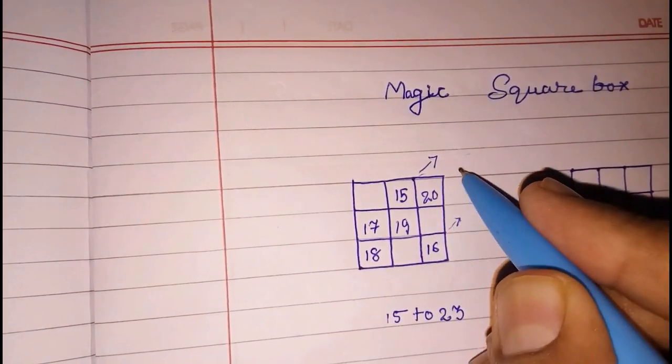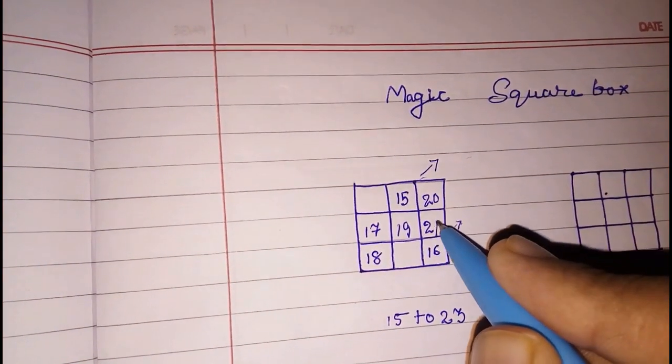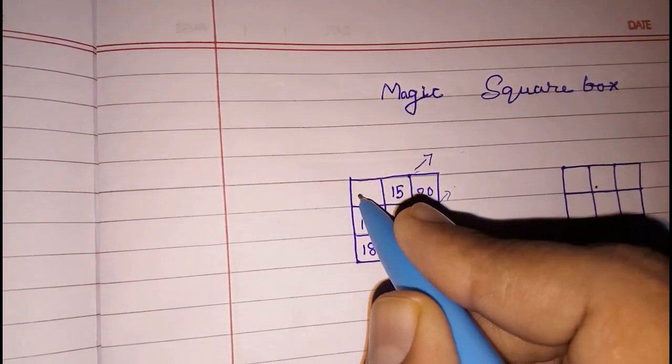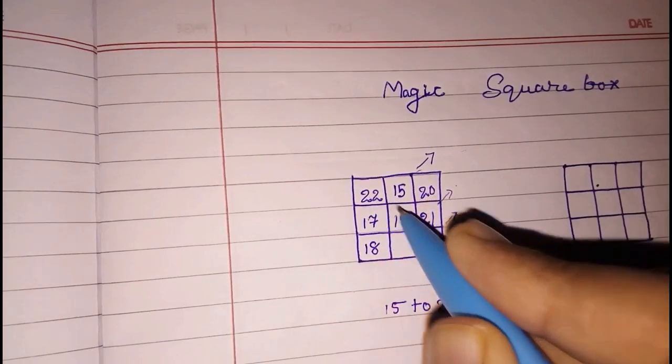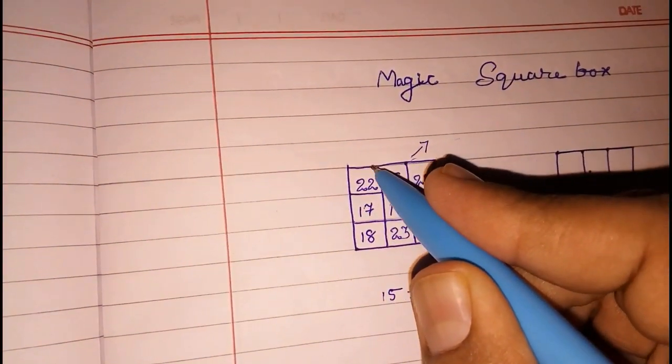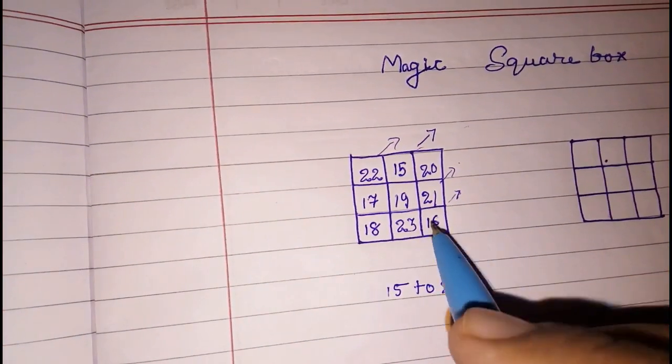Again no boxes here so here also we cannot move so downstairs, 21. Again arrow like this from here 21 after 22 and the remaining one will be 23. You can see it here, you can see it here, it will go here, but no box here so we have to go downstairs, look here.